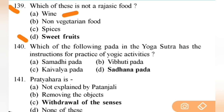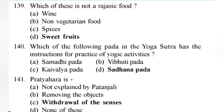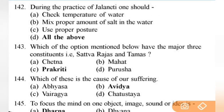Which path in the Yoga Sutras has instructions for the practice of yogic activities? Right answer is D — Sadhana Pada. Next: Pratyahara refers to — right answer is C — withdrawal of senses — very important. Next: during the practice of Jala Neti, one should check the temperature of water, mix the proper amount of salt, and use the proper posture — all of the above.